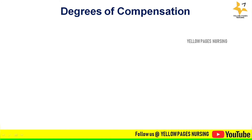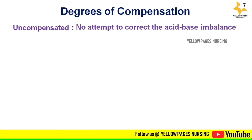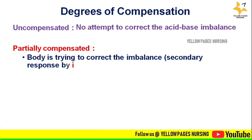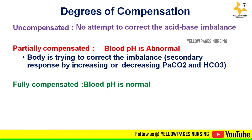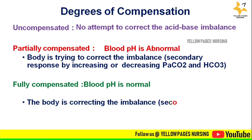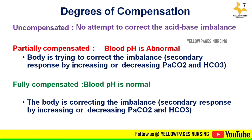There are three degrees of compensation. Uncompensated: the body doesn't attempt to correct the acid-base balance. Partially compensated: the body is trying to correct the imbalance via the secondary response by increasing or decreasing PaCO2 and bicarbonate, but blood pH is still abnormal. Fully compensated: blood pH is normal because the body has corrected the imbalance. If pH is normal but the other two parameters are abnormal, it is fully compensated.